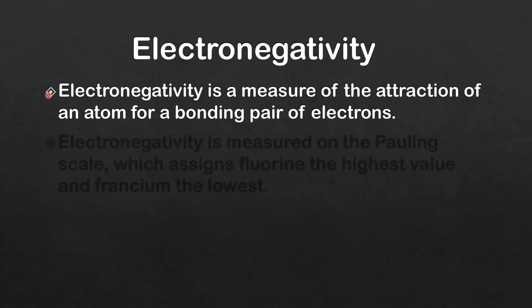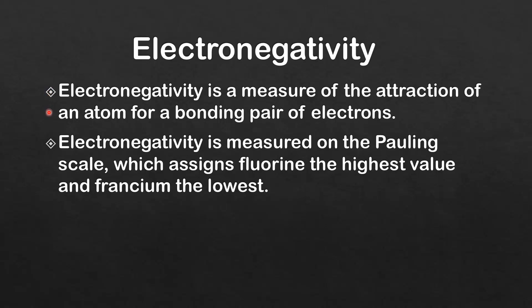Let's start with a definition of electronegativity. Electronegativity is a measure of the attraction of an atom for a bonding pair of electrons. Electronegativity is measured on the Pauling scale, which assigns fluorine the highest value and francium the lowest.